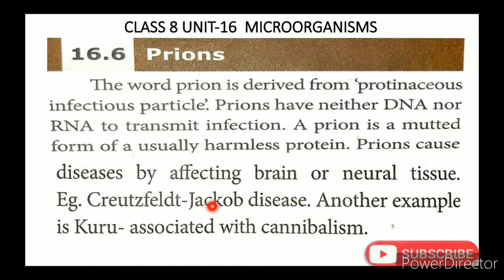இதான் வந்து என்ன சொல்லுவாங்கன்னா — mad cow disease என்று சொல்லுவாங்க. அது 1986-ல வந்து UK-ல வந்திருக்கு. முதல்ல மாடுகளுக்கு வந்து, ஒரு வாரத்துல வந்து 1000 cows இறந்து போச்சு. 1986-ல வந்தாலும், 1993-ல்தான் விவரம் நல்லா தெரியாரம் சிருக்கு. (This is what is called 'mad cow disease.' It appeared in the UK in 1986. It first affected cows, with 1000 cows dying within a week. Although it appeared in 1986, the full details were understood only by 1993.)